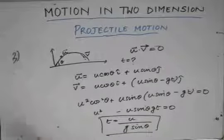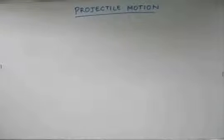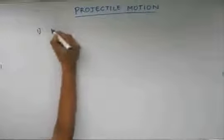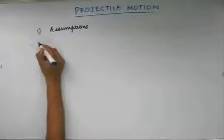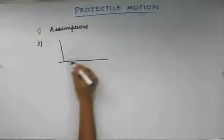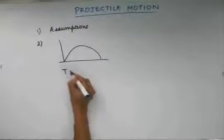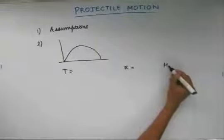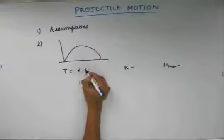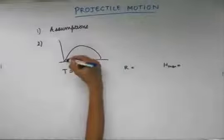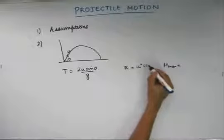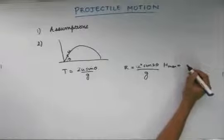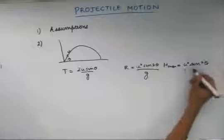So this was our third problem. Now, before moving on to the fourth problem, let's recapitulate what we have learned. We have discussed the assumptions made while solving projectile motion problems. For a projectile projected from a horizontal surface, we derived the time of flight as 2u·sinθ/g, and the range as u²·sin2θ/g, where u is the initial velocity and θ is the angle with the horizontal.